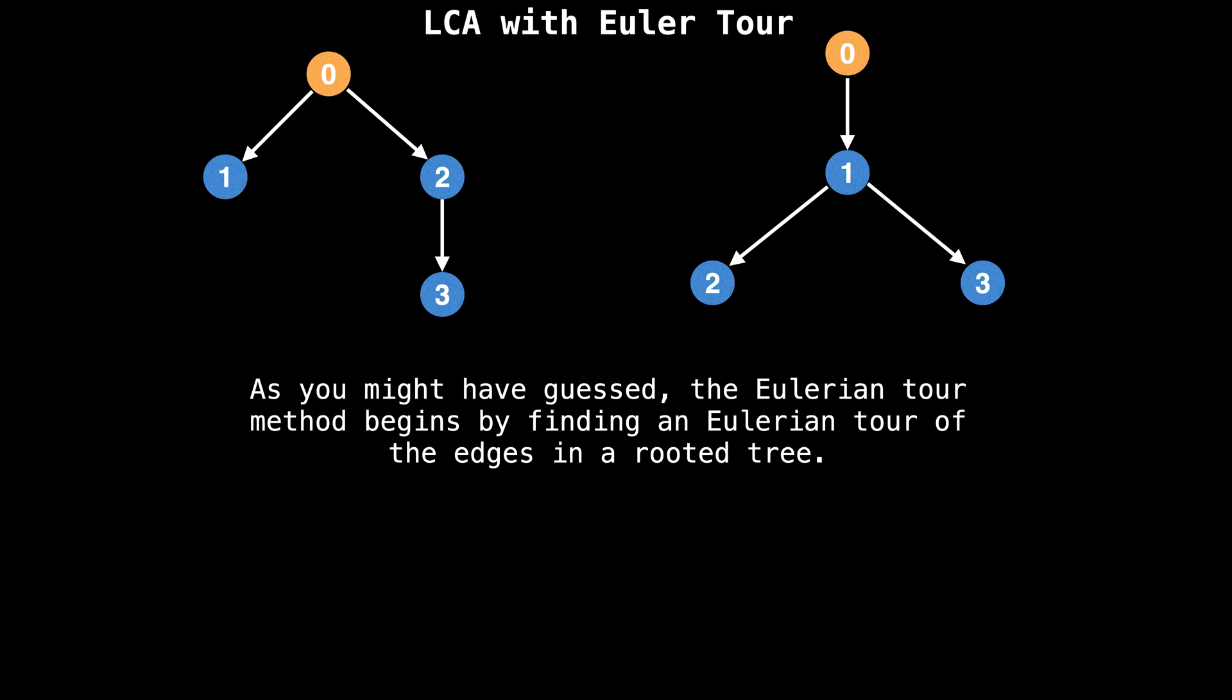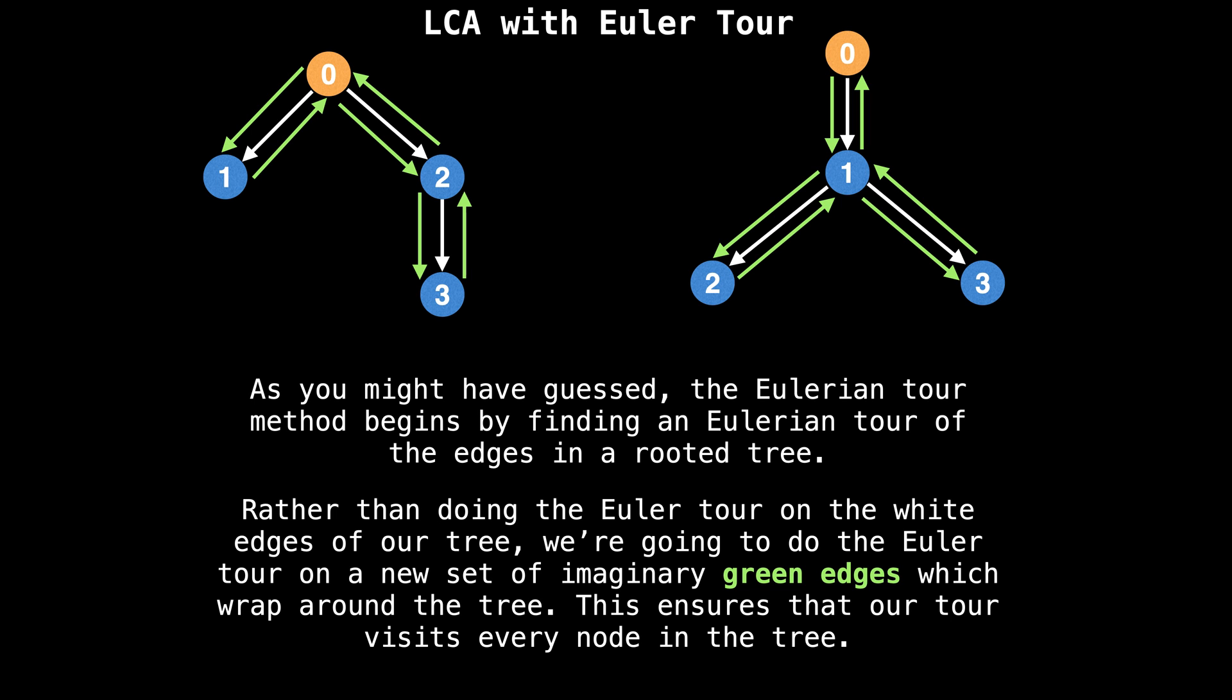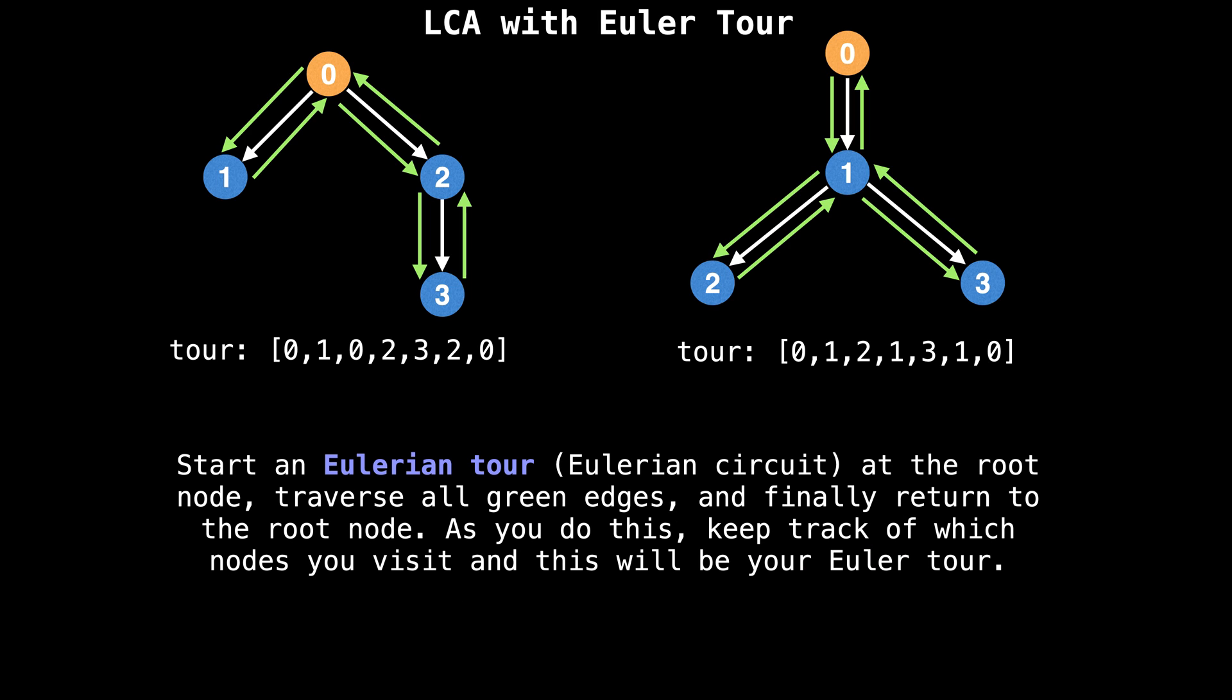we can start talking about the Eulerian tour algorithm. As you might have guessed, the Eulerian tour method begins by finding an Eulerian tour around the edges of the tree. Rather than doing an Eulerian tour on the white edges of our tree, we're going to do an Eulerian tour on a new set of imaginary green edges which wrap around the tree. This ensures that the tour visits every node in the tree. What we're going to do is start an Eulerian tour, also known as an Eulerian circuit, at the root node, traverse all the green edges, and finally return to the root node. As you do this, keep track of which nodes you visit, and this will be the nodes along the Eulerian tour.